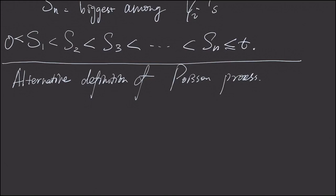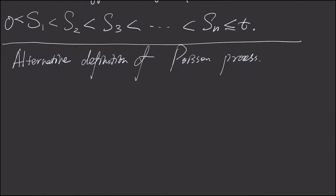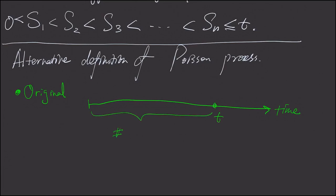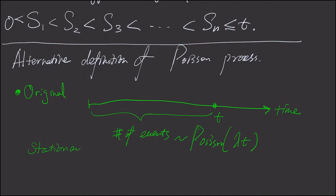In this last video on Poisson process, I will learn a new definition of Poisson process — this is actually the original definition presented in the textbook. First, I want to recall the original Poisson process definition presented in our lectures: given the counting process up to time t, the number of events is a Poisson distribution with rate lambda times the length of that time. We also have stationary and independent increment.